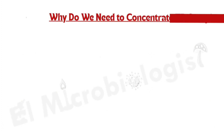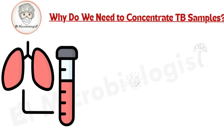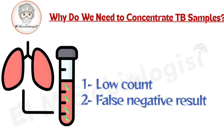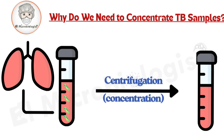Why do we need to concentrate TB samples? Tuberculosis bacteria are usually present in low numbers in clinical specimens, especially early in the infection. That means if we stain or culture the raw sample directly, we might miss the bacteria completely. So we have to concentrate the sample to enrich it with any TB bacteria present, and remove everything else that might interfere — mucus, debris, and other non-TB organisms.